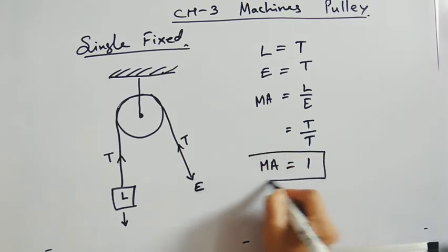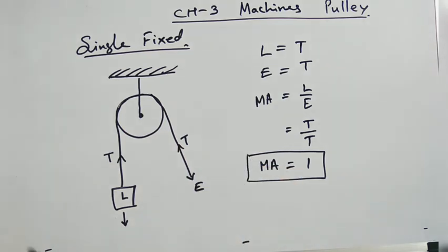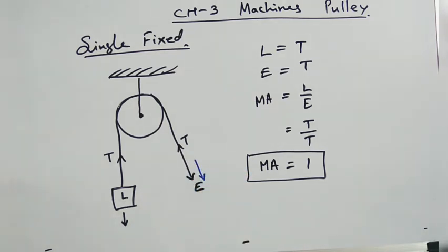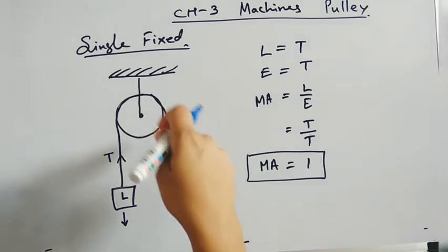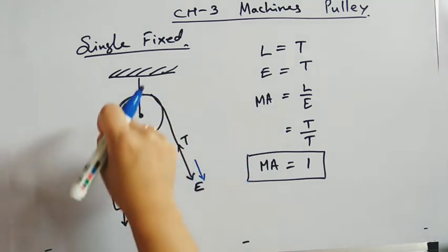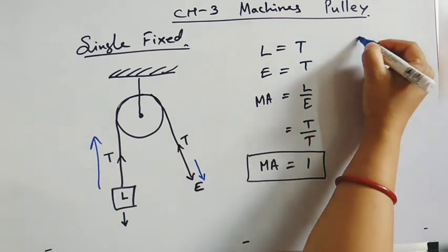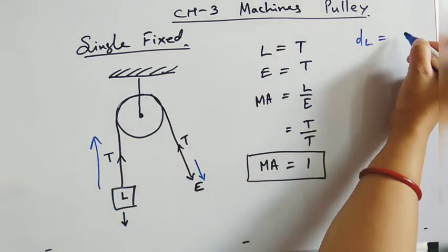Now let us check the velocity ratio. What is velocity ratio? Suppose the distance moved by effort - you are pulling the effort in downward direction, say for 1 meter. So by the same distance the load will also move up. So suppose the distance moved by load is d.